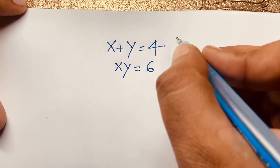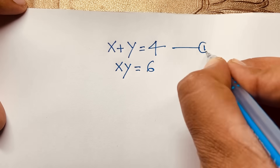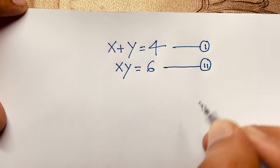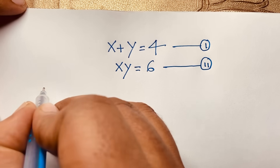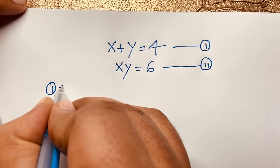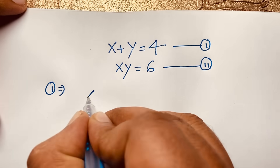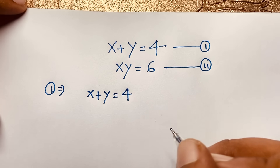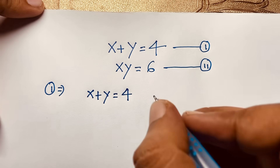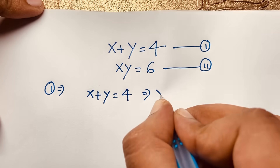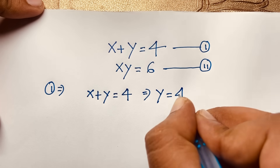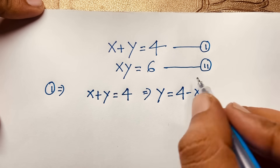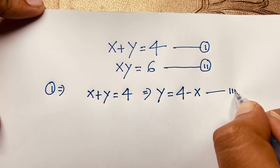So, solution. This is our first equation and this is our second equation. Now, if we take our first equation, x plus y is equal to 4, then y will be 4 minus x. This is our third equation.